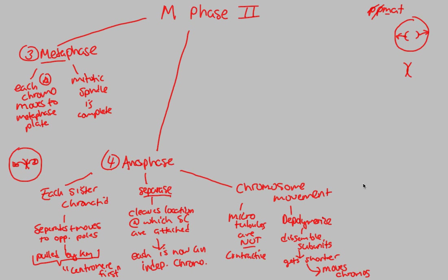That's how chromosomes move during Anaphase. Each chromosome is held at the centromere — each chromosome now has its own independent centromere. The microtubule keeps hold of that centromere and drags the chromosome to the opposite poles. That's how chromosomes move during Anaphase.